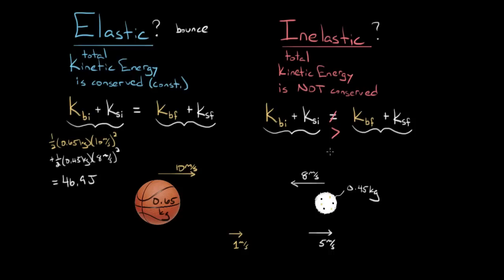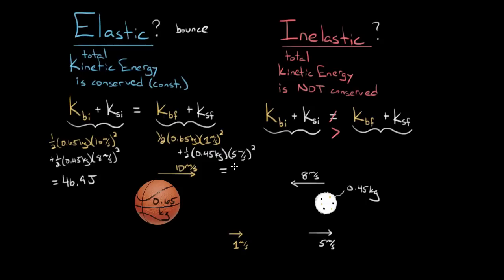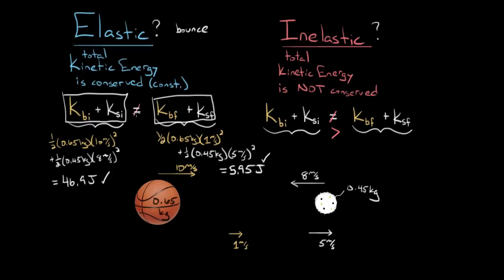Is this equal to the final amount? The final kinetic energy is ½ × (mass of basketball) × 1², plus ½ × (mass of ice cream) × 5². Adding all that up, we get 5.95 joules of total final kinetic energy. So is this collision elastic? No way — it's not even close. The initial total kinetic energy was 46.9 joules, and the final total kinetic energy was 5.95 joules. Kinetic energy was not conserved, so we consider this an inelastic collision.